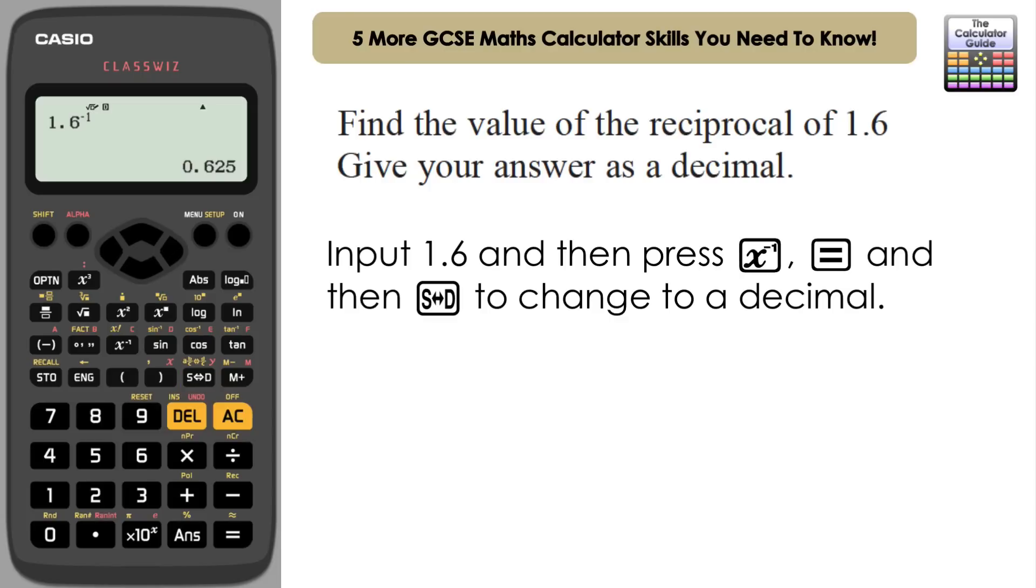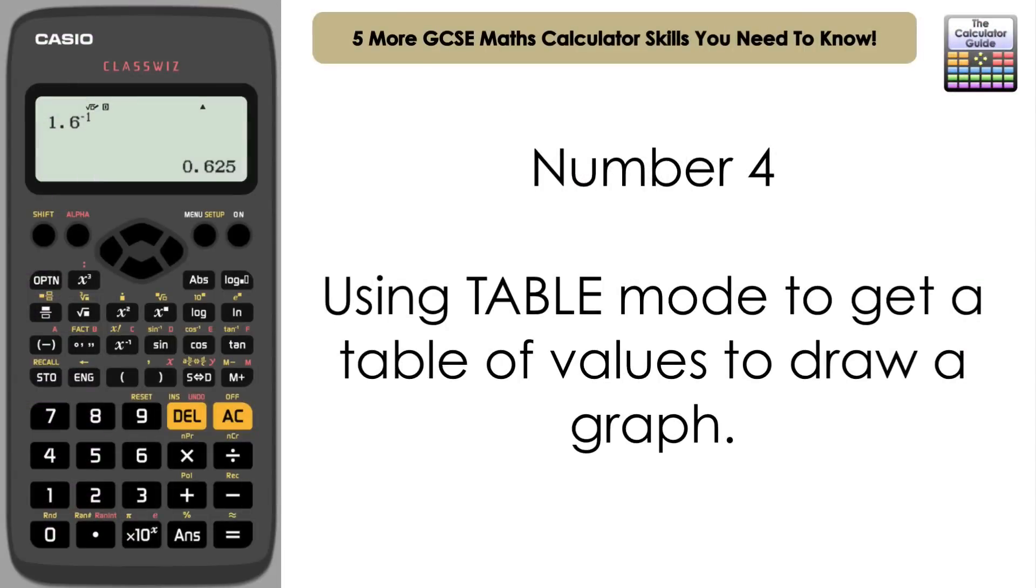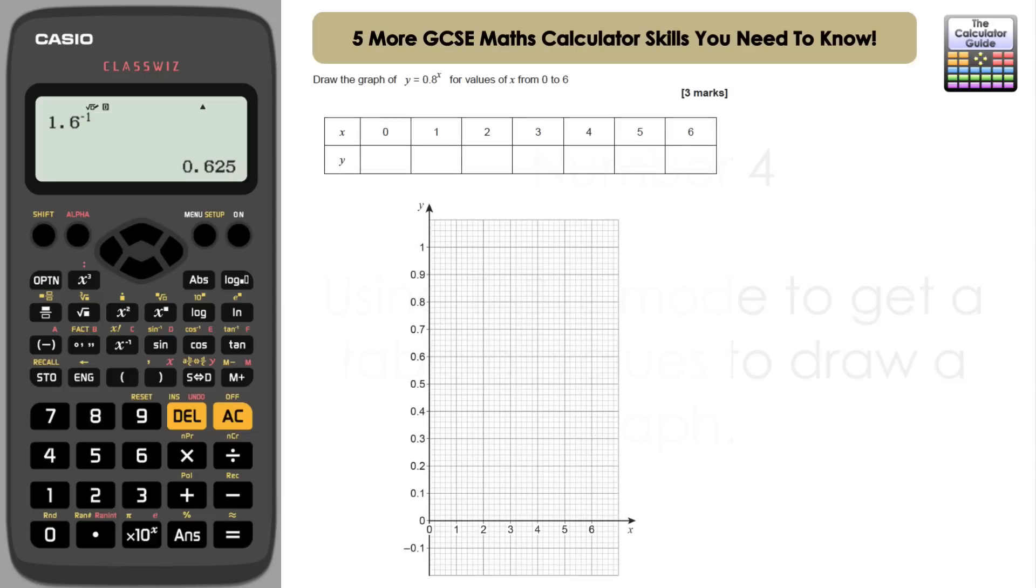The fourth of the skills that you need to know is to use a table function to generate a table to help you to draw a graph. Let's take a look at the question. Draw the graph of Y equals 0.8 to the power of X for values of X from 0 to 6. So we've got a table set up for us there that we can complete, but we can actually do this table on the calculator and find a set of points that we can plot to draw our graph.